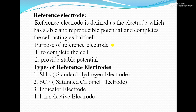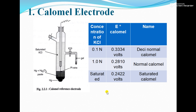The types of reference electrode are: standard hydrogen electrode, standard calomel electrode, indicator electrode, and ion selective electrode. First, we will look at the calomel electrode, which is a reference electrode.